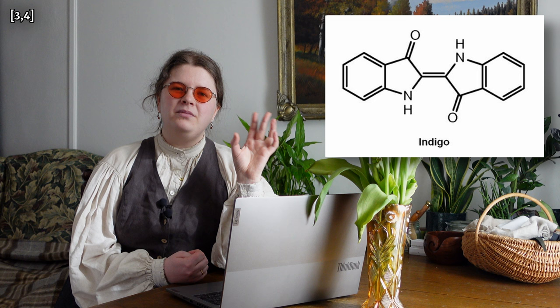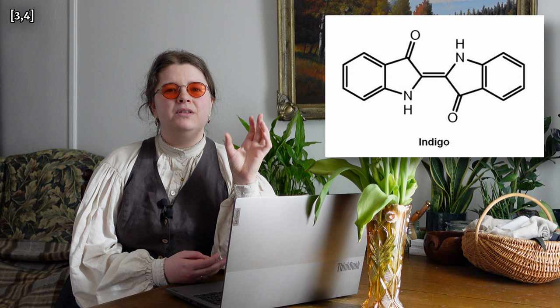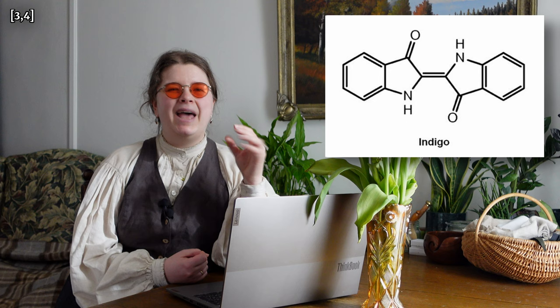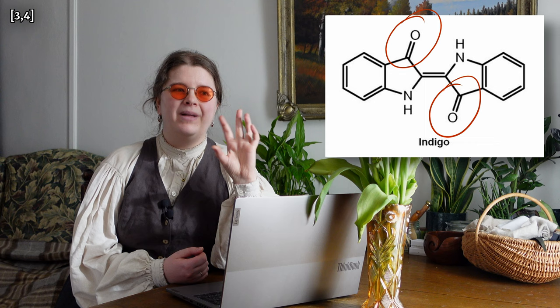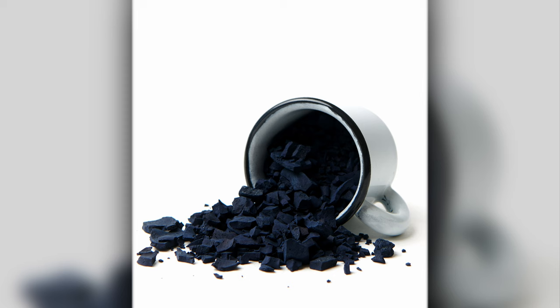I am not going to quiz you on this later, but if you know nothing of chemical structures, suffice to say that this is a very stable molecule — it is pretty content to just hang out, do its own thing. There is a slight negative charge around the two oxygen atoms, but not enough that it wants to dissolve in water at all. So when we want this blue — so dark it is almost black in its concentrated form — to dye our clothes, we need to change it first.